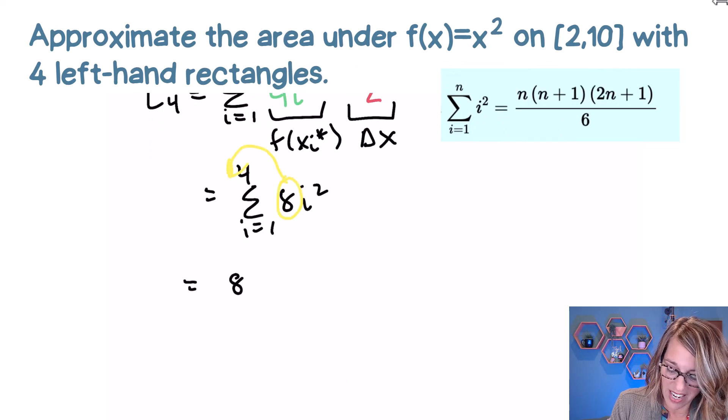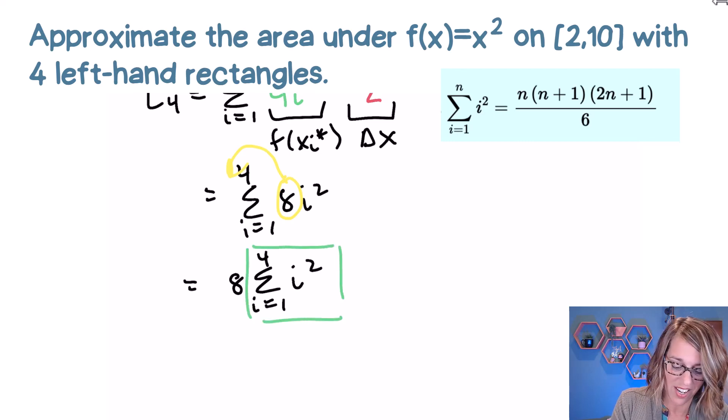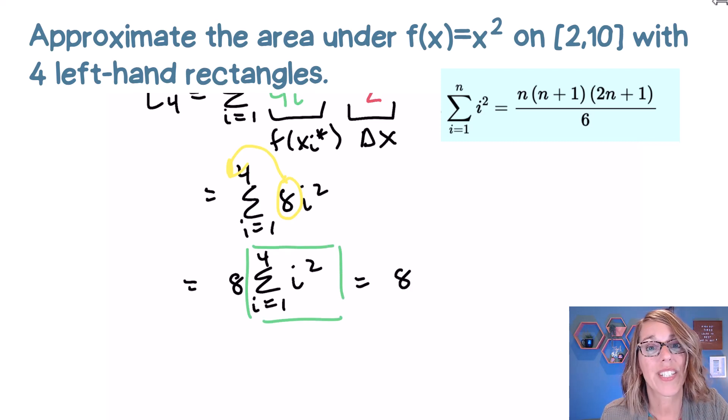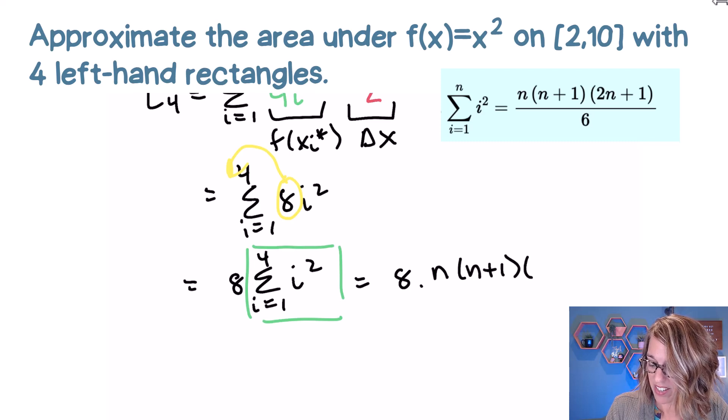So we've got eight, the sum as i goes from one to four of i squared, I can replace our summation with the formula. So carrying that eight over what's in the green box gets replaced with that formula n times n plus one times two n plus one, all divided by six.